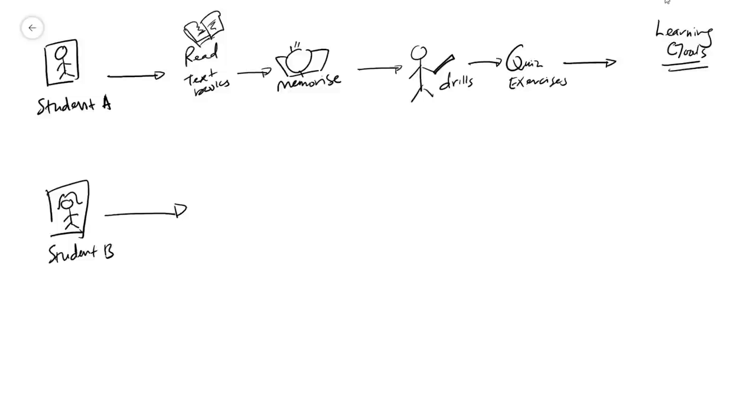Then we go for Student B. In this case, Student B will probably skip certain steps because of being an excellent student. So you can actually give them the quizzes immediately, or the exercises, just to test them immediately. Then the teacher will provide necessary feedback on what they should be improving, and then you give quizzes and exercises again.